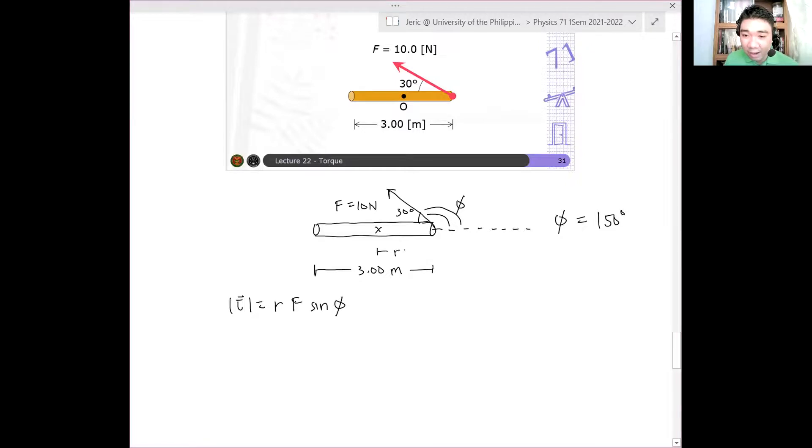Hence, what you want is this length here. This is my R. And that R is simply what? It's simply half of assuming that it's uniform. This is 1.5. Okay? I hope that's clear.